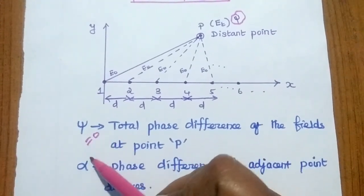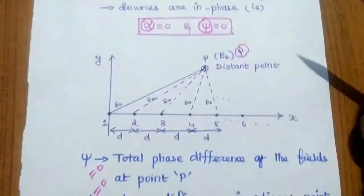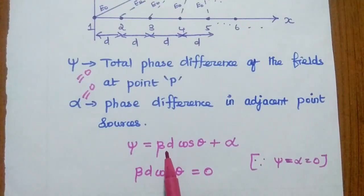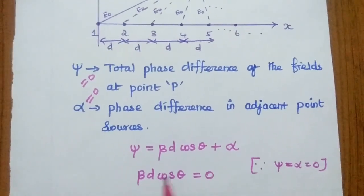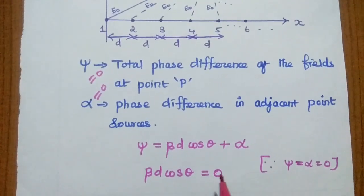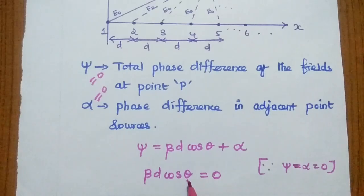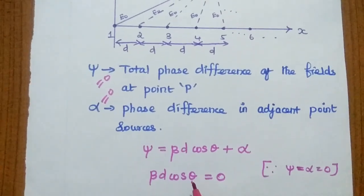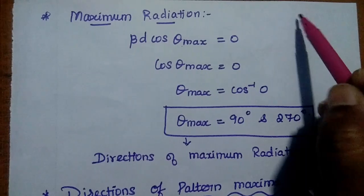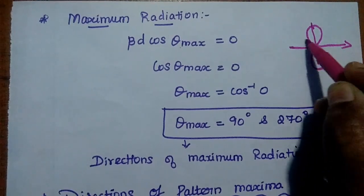For the broadside array antenna, ψ and α are both equal to zero since it is an in-phase component with no phase difference. The total phase difference is ψ = βD cosθ + α. Since α = 0 and ψ = 0, we can write βD cosθ = 0, where θ is the direction of radiation defining the angle towards which radiation occurs.